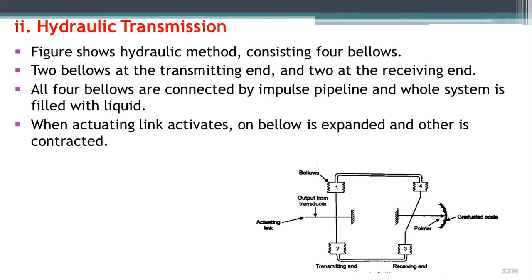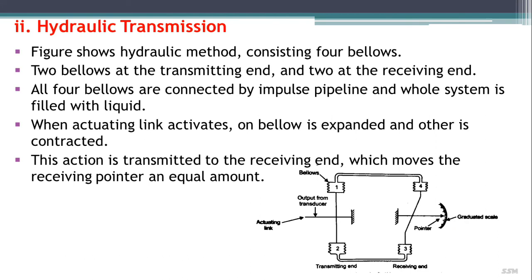When the actuating link on the transmitting end is operated by the measurement, one bellows expands and another contracts. If the output from the transducer actuates bellow one, it expands and bellow two contracts, so that the impulse effect is imposed on bellows three and four. The deflection of the pointer can be observed in the respective direction — the action is transmitted to the receiving end, moving the receiving pointer by an equal amount. The purpose of using two bellows on either side is to compensate for changes in ambient temperature.